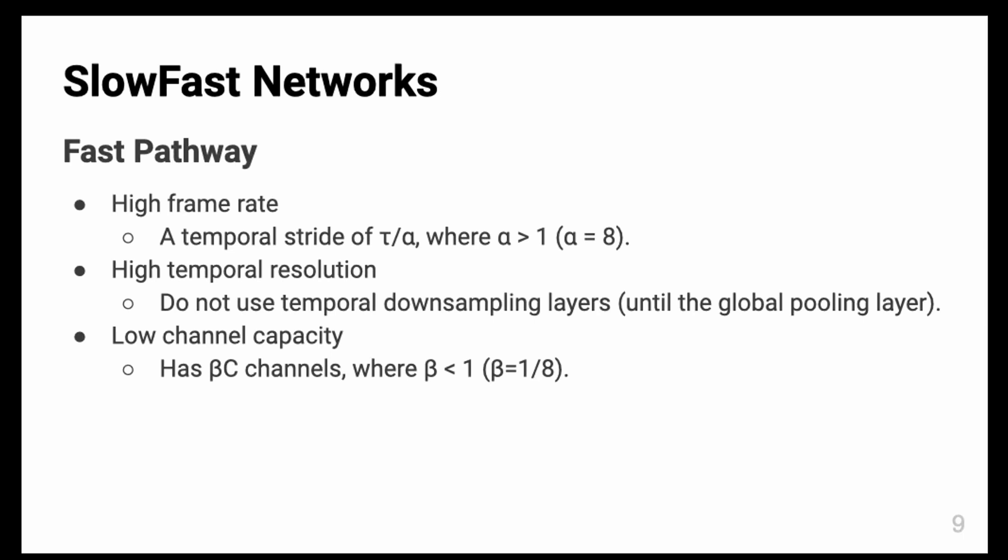When we say the channel number of the slow path as C, then the fast pathway has βC channels, where β is smaller than 1. The authors typically use β as 1/8.